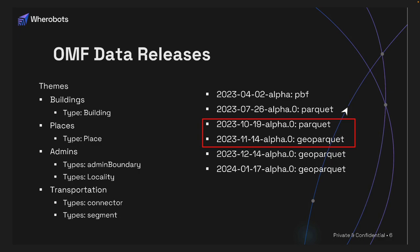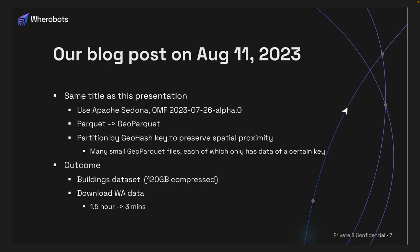You may wonder what happened between October and November 2023 — what drove them to use GeoParquet format? On August 11th, 2023, Wherobots engineers published a blog post about how to use Apache Sedona to transform data from Parquet to GeoParquet. Essentially, we transformed the data and, most importantly, partitioned it based on GeoHash key to preserve spatial proximity.